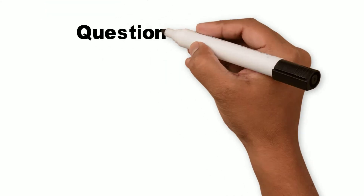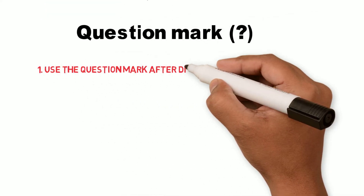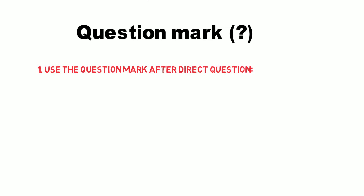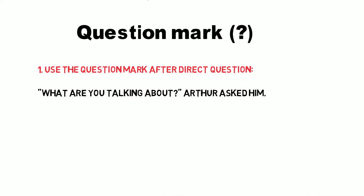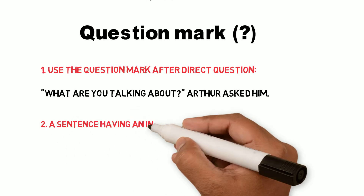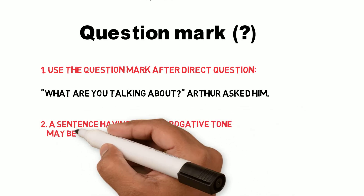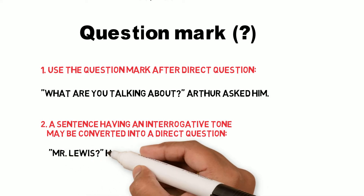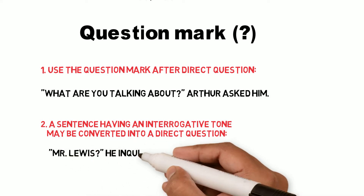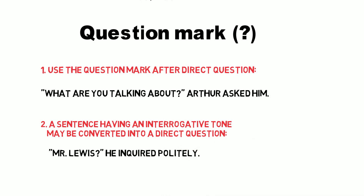Question mark. Use the question mark after a direct question. For example, what are you talking about? Arthur asked him. A sentence having an interrogative tone may be converted into a direct question. For example, Mr. Lovace. He inquired politely.